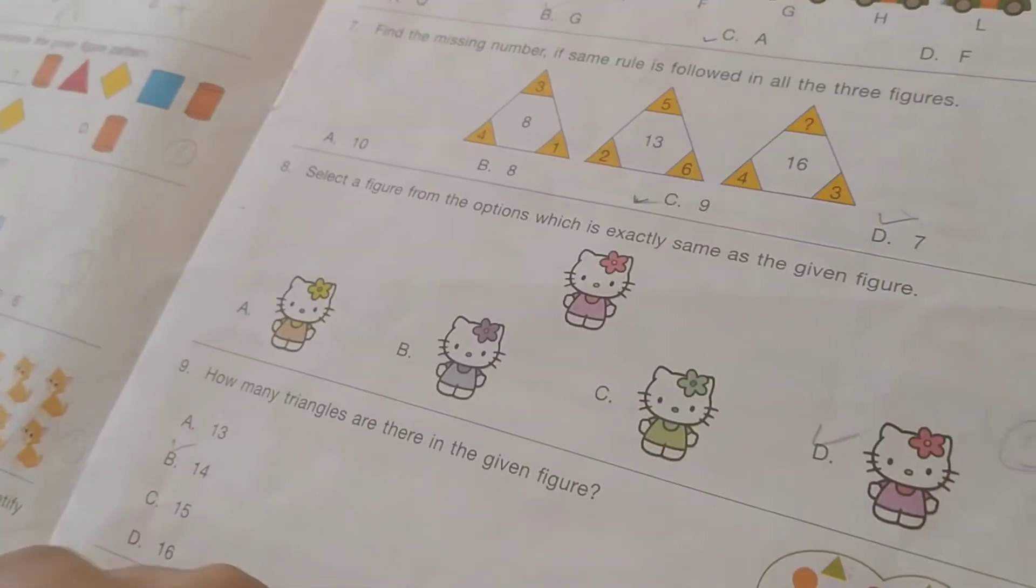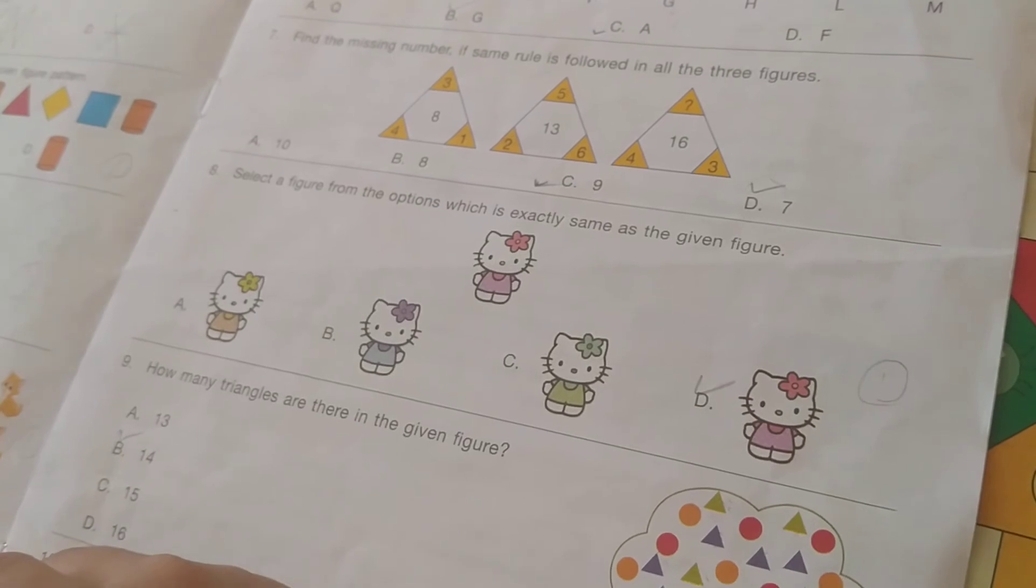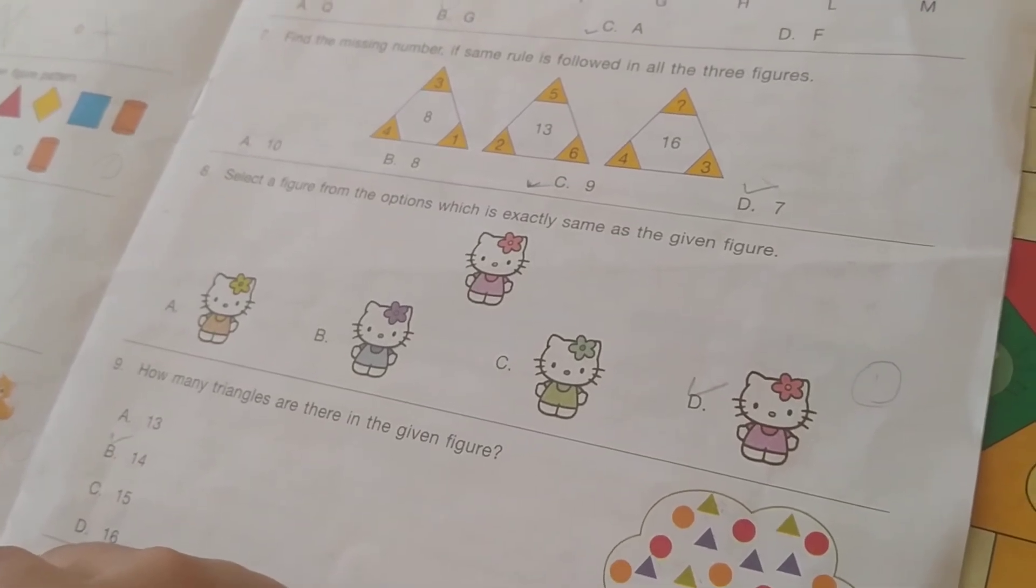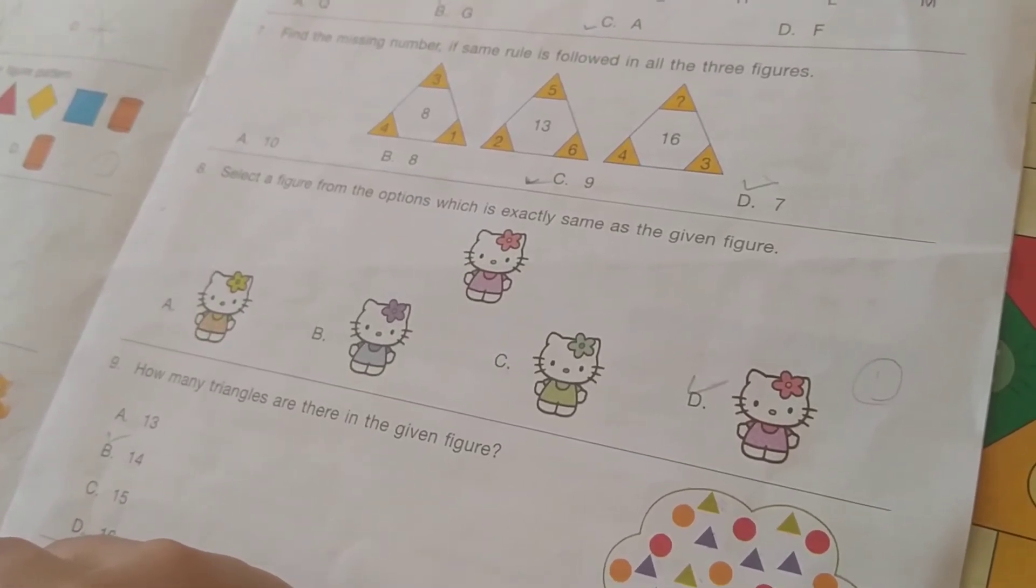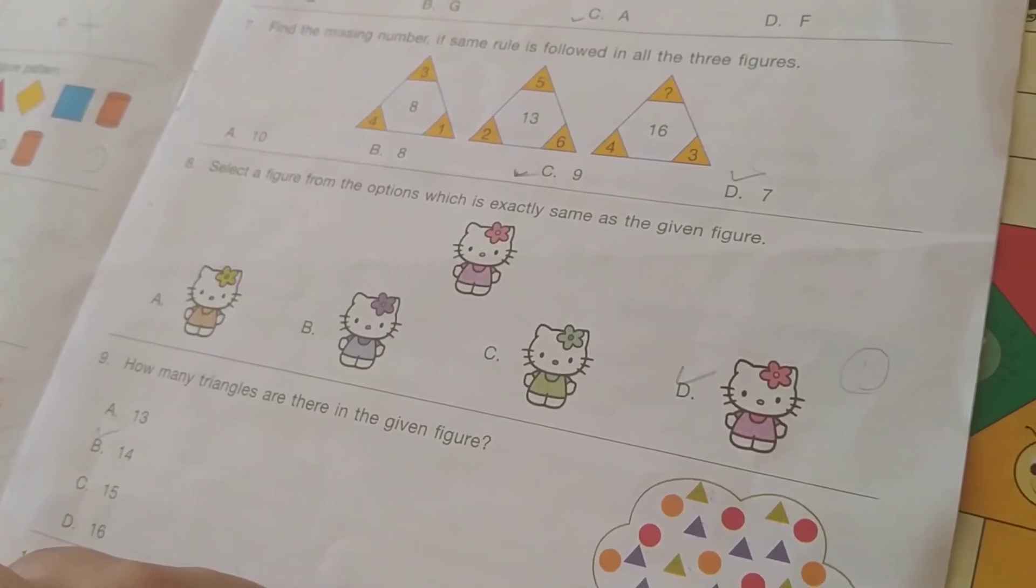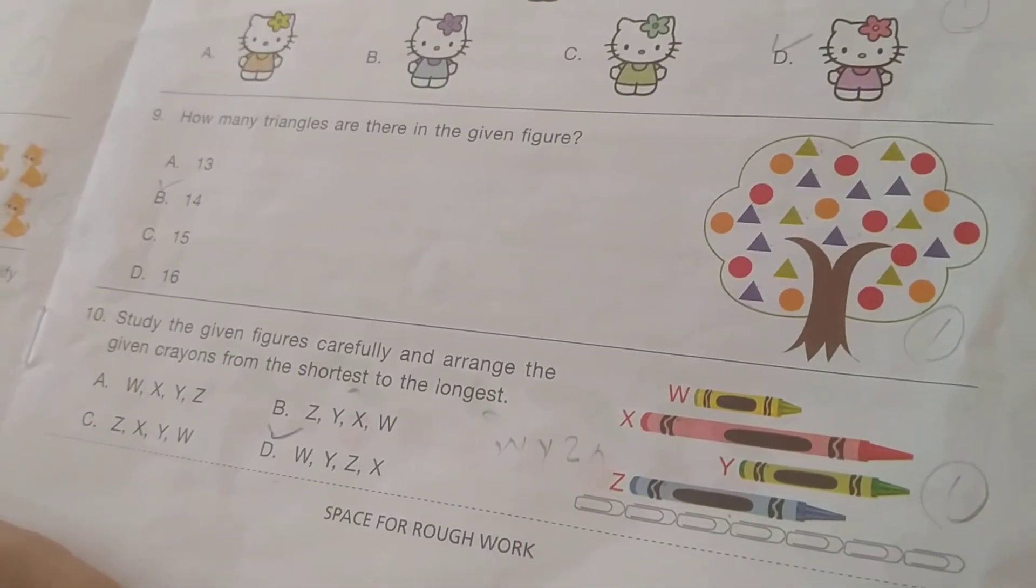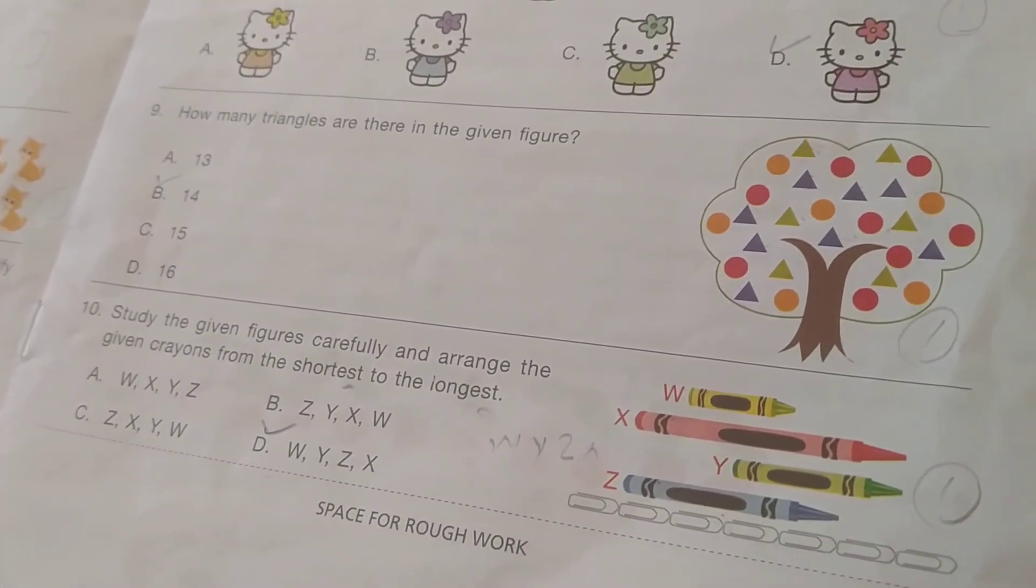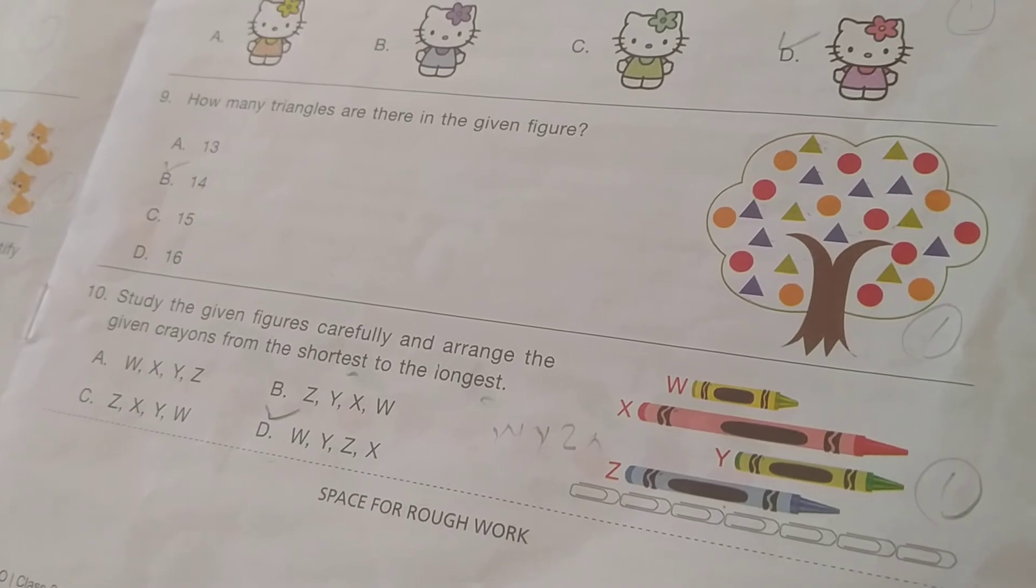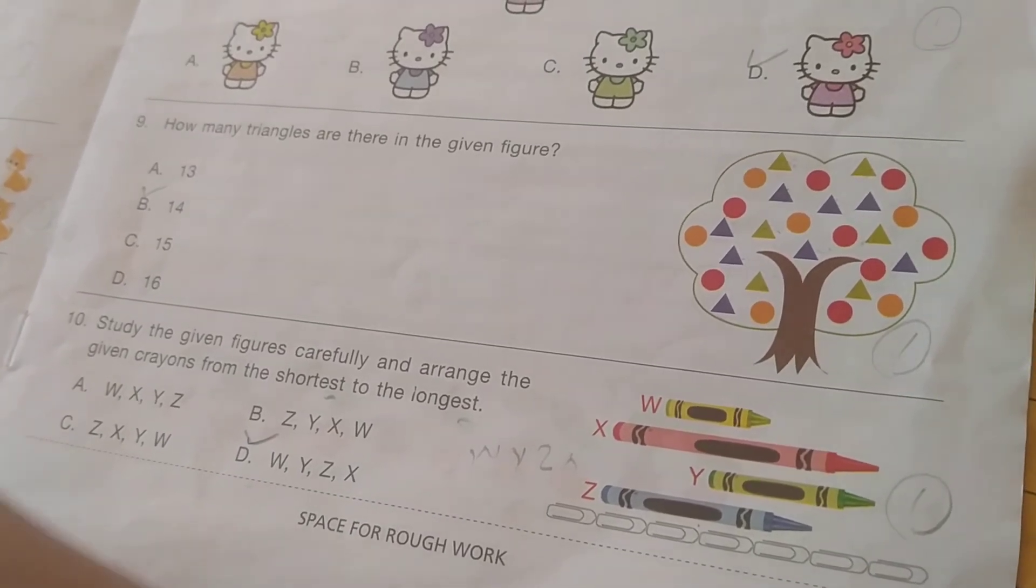Select a figure from the options which is exactly same as the given figure. So the answer is D. How many triangles are there in the given figure? So the answer is 14.